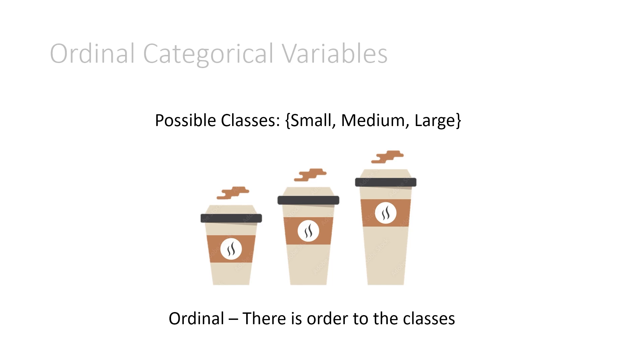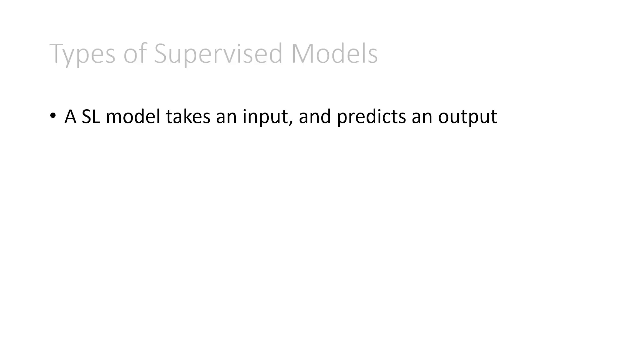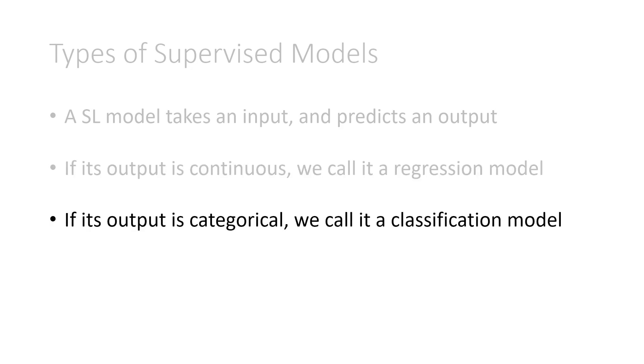Now we can talk about the types of supervised models. So as we know, a supervised learning model takes an input and predicts some output. If its output is continuous, we call it a regression model. So a regression model is something that predicts a continuous variable. If its output is categorical, we call it a classification model. So a classification model is predicting a categorical variable, which makes sense because there are multiple different classes.